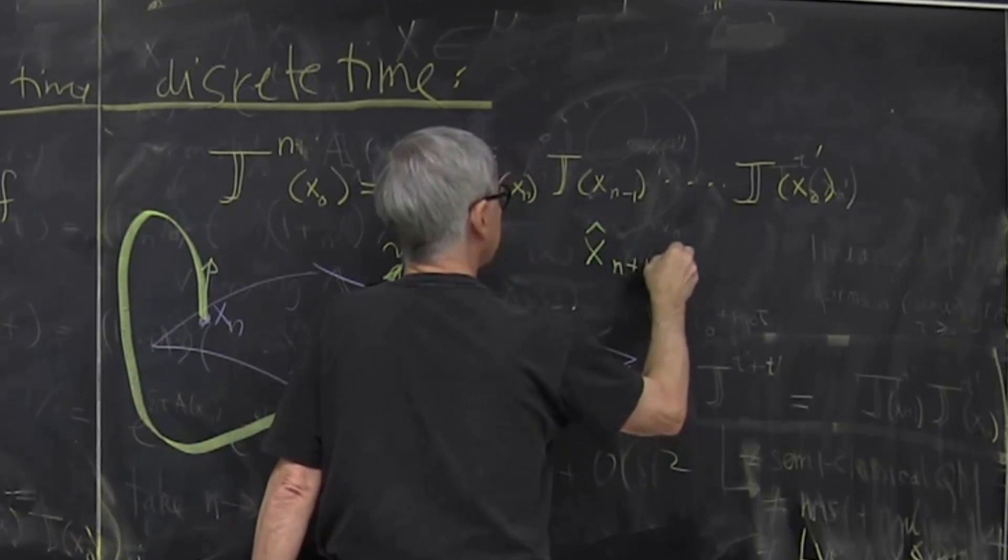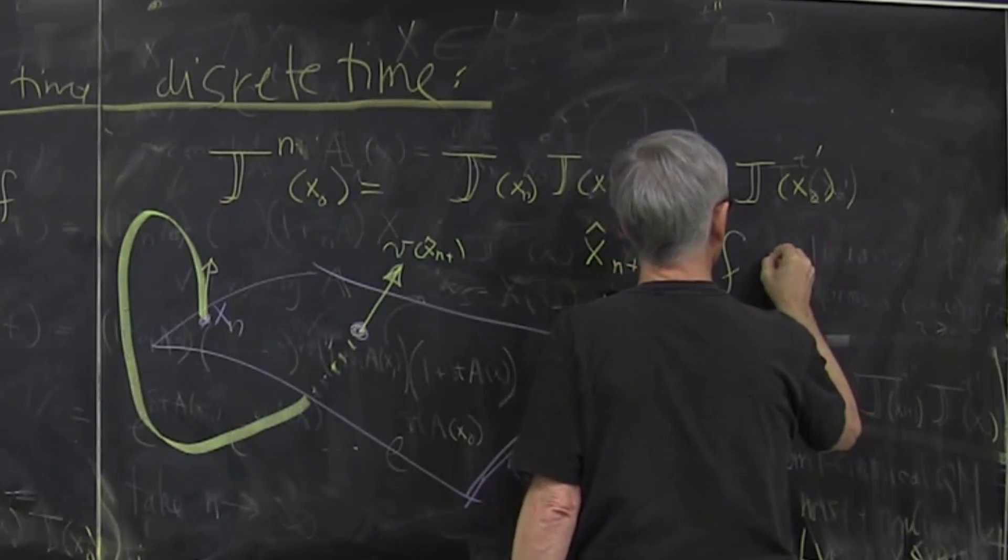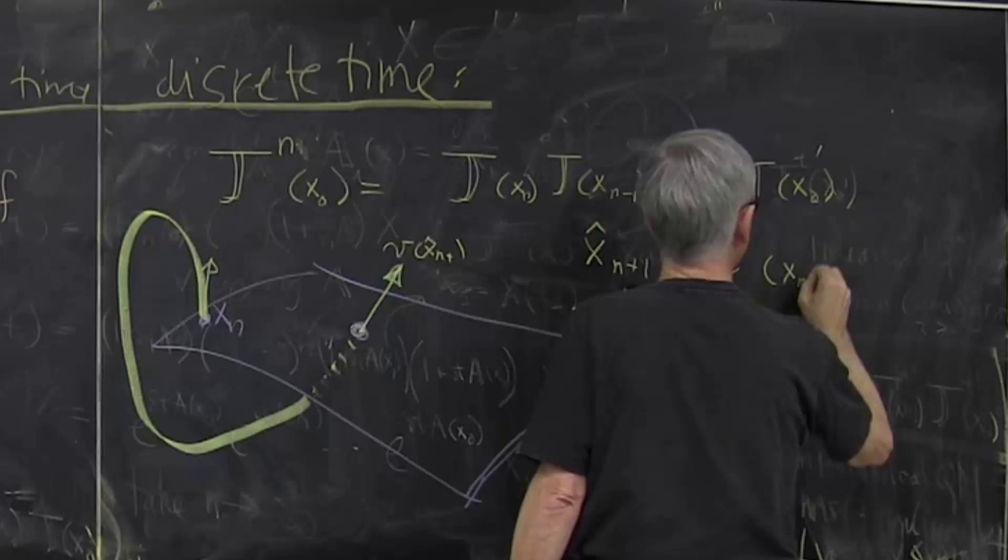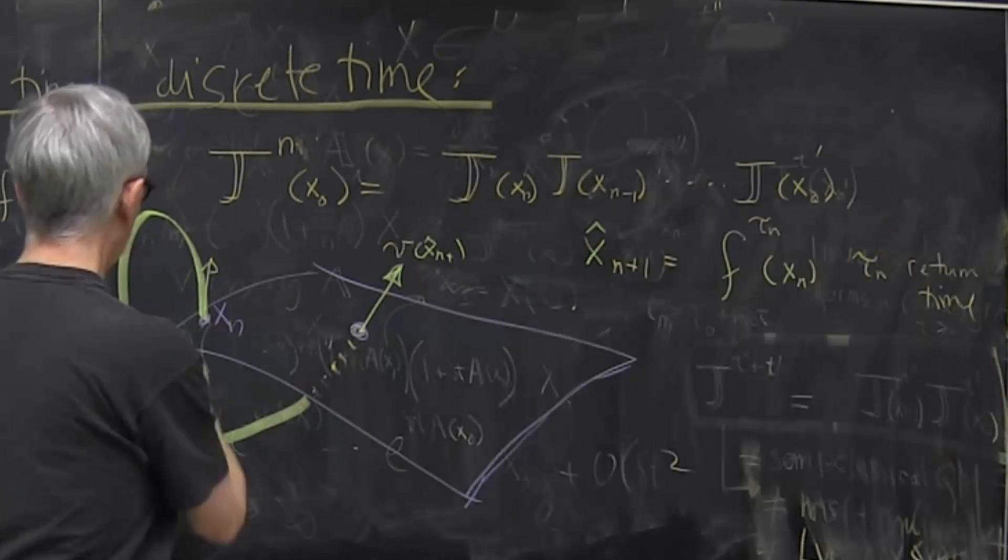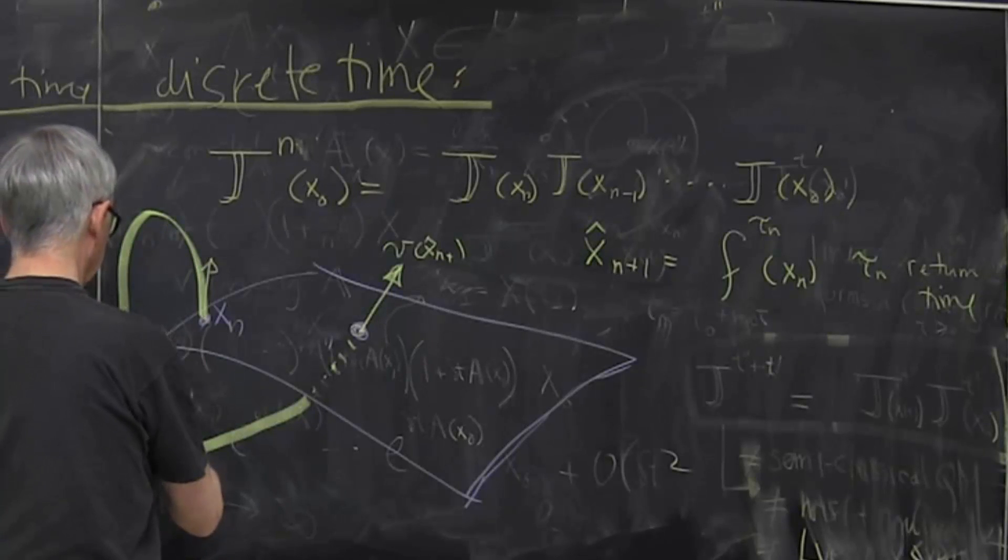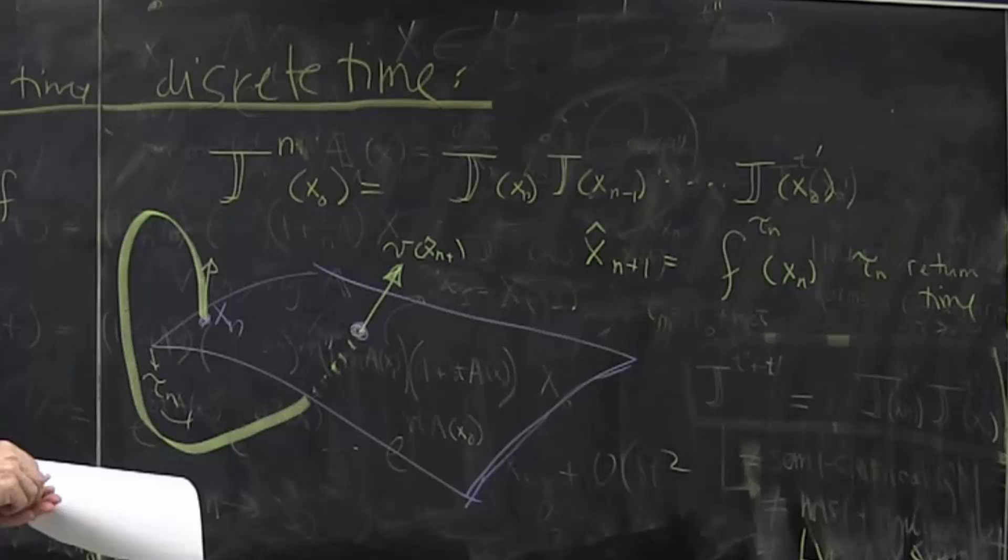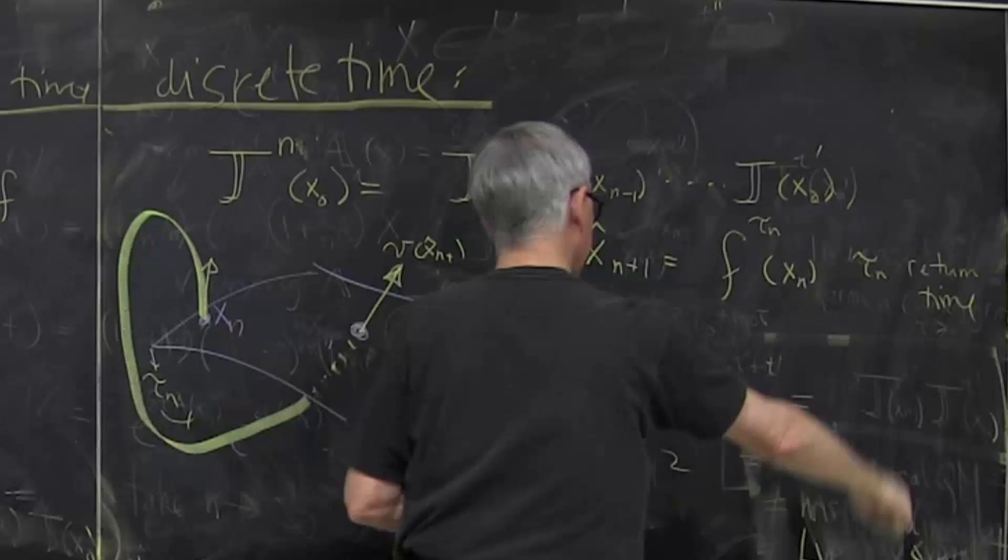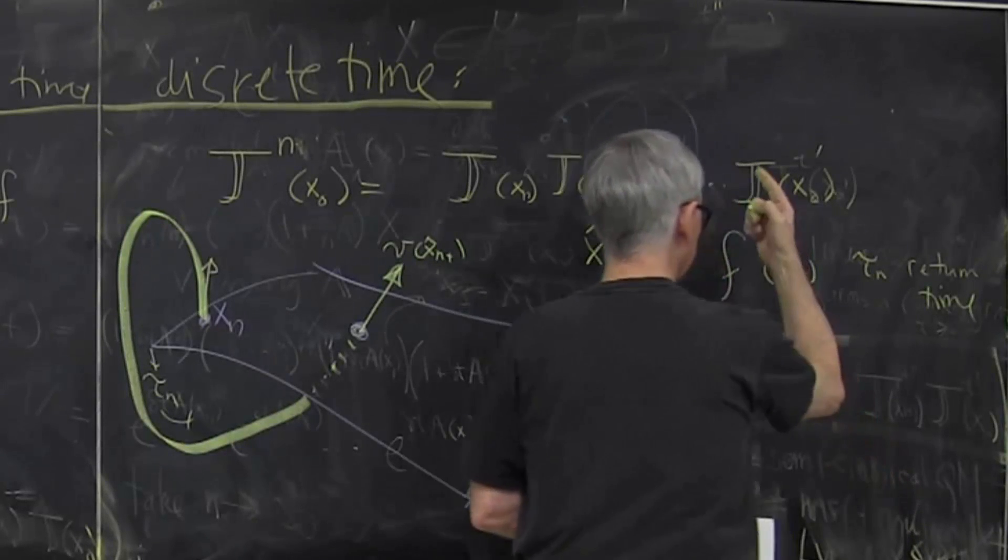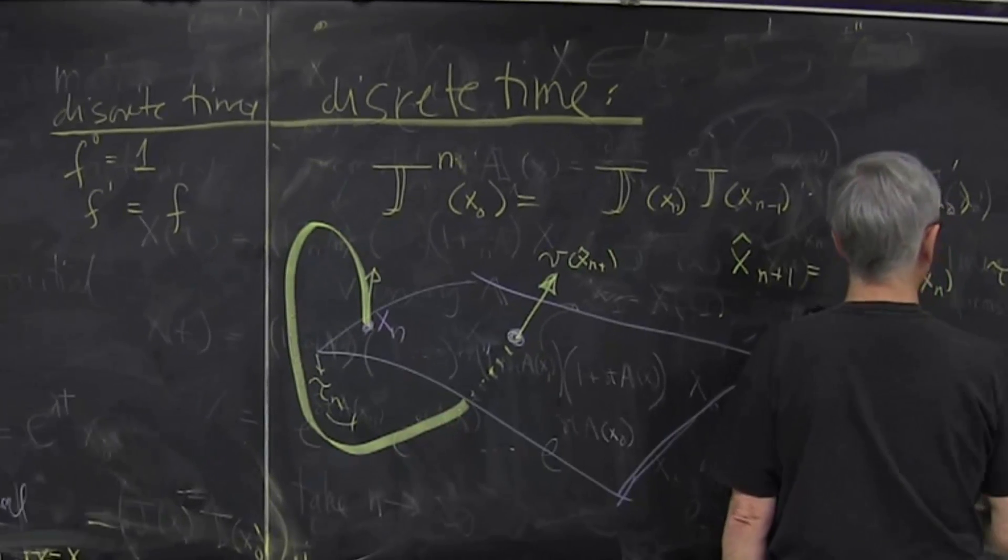If you remember, xn plus 1 is my flow map in full state space, starting at xn, tn is the return time. How long time I have to go to exactly land here. So that's something we compute, and that's how we compute the Poincaré return map. It's a function. It's this function. We give it a name. This is one-step map, and it depends on where I started. Which maps tend to do in nonlinear dynamics.